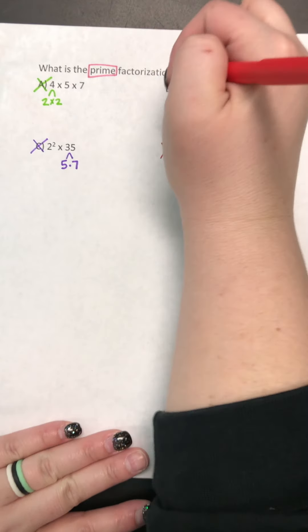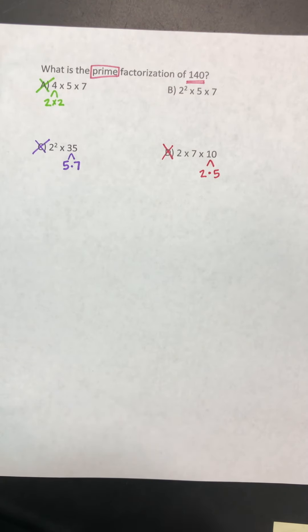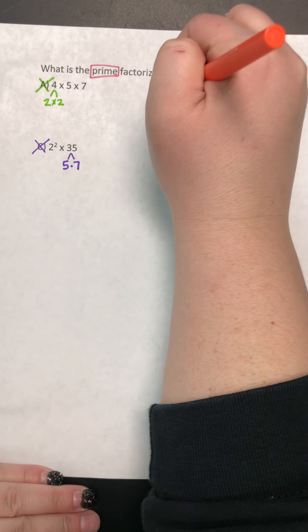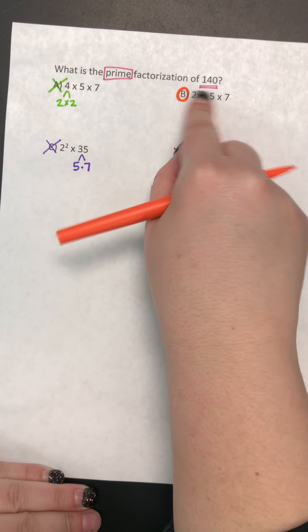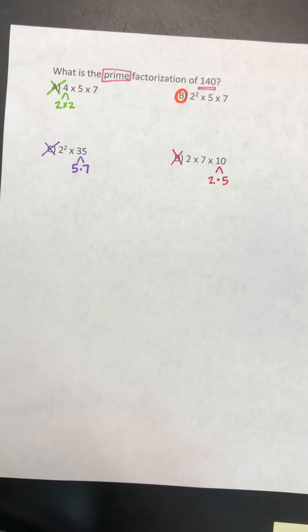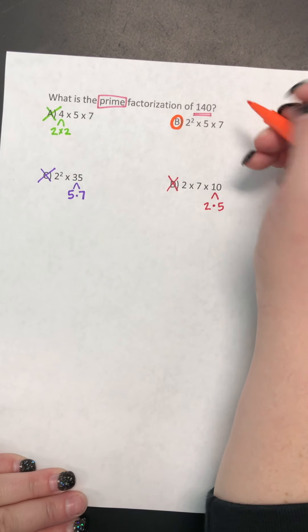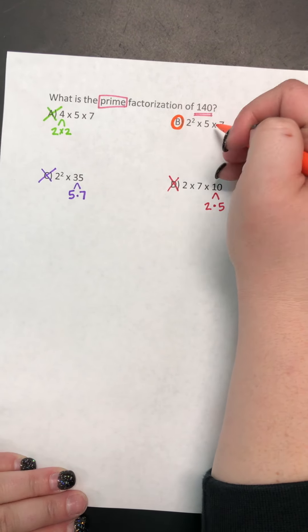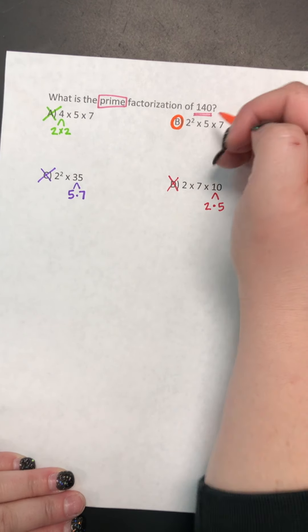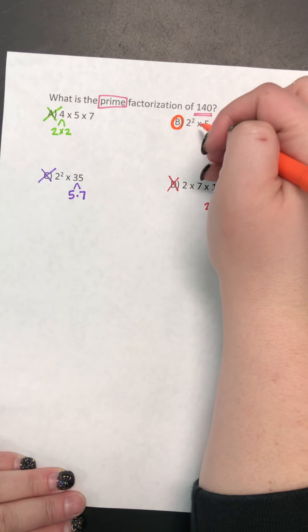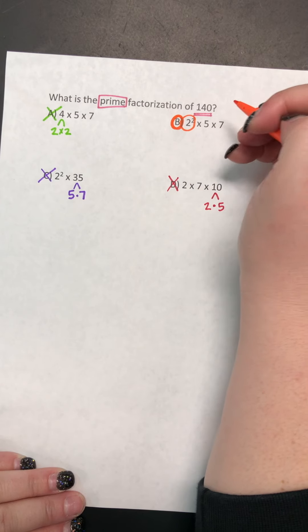So really, my only answer that makes sense is answer B. And just to make sure that when we multiply it, it equals 140, we're going to work this out. So we're going to work it out just like PEMDAS. So I have exponents, and I have multiplication. So I know exponent comes first.